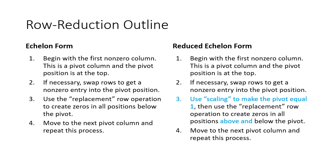When we're going for reduced echelon form, we're always going to use a scaling operation to make a pivot equal 1, if the pivot isn't already 1, and then we're going to use replacement row operations not only to create zeros below the pivot, but also above the pivot. For reduced echelon form, our pivot — our leading entry — needs to be the only non-zero entry in its column, so we need to have zeros above and below.